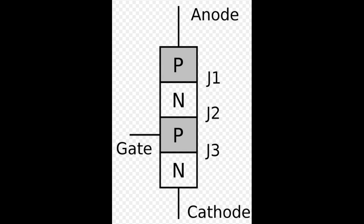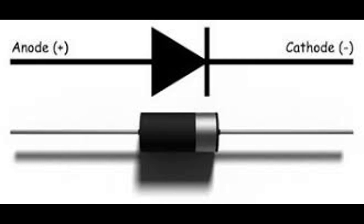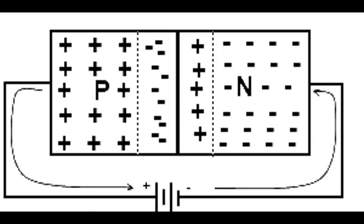Let's understand how Thyristor works. As you know, the diode allows current flow only in one direction.